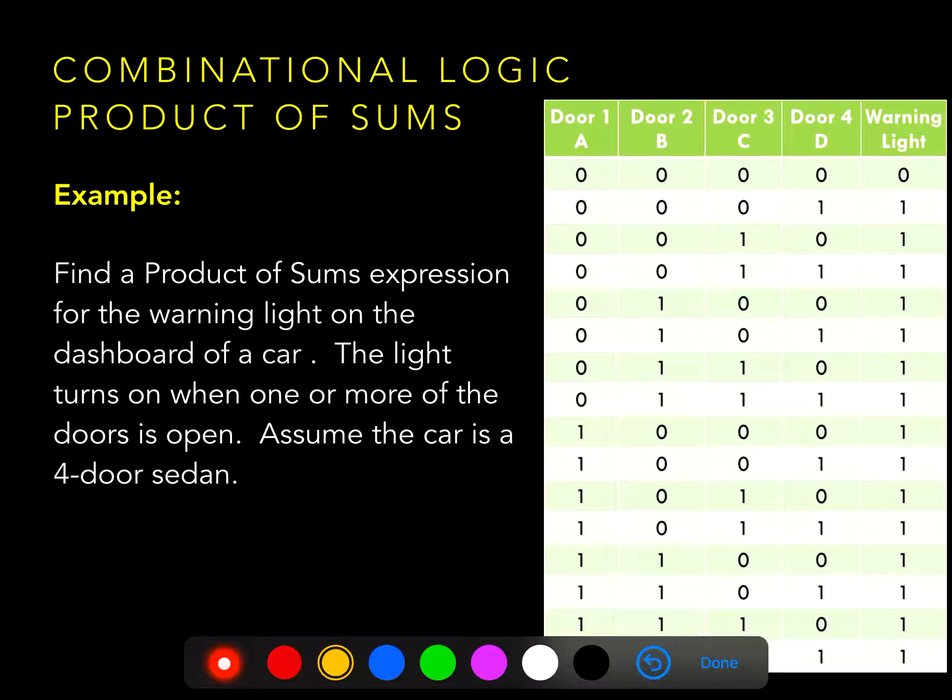And if we take a sum of products expression for this variable warning light, we would have 15 terms in our sum of products, whereas the product of sums would only produce one term corresponding to the first line in the truth table. Since all the variables are equal to zero, they all appear in their uncomplemented form in the product of sums expression. And that's much easier than generating the sum of products expression, looking at the 15 lines in the truth table that produce a one at the output.